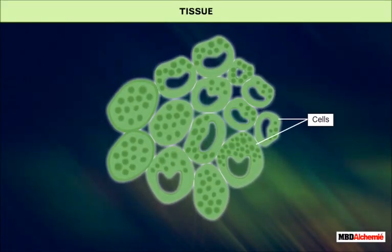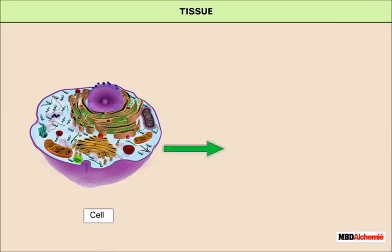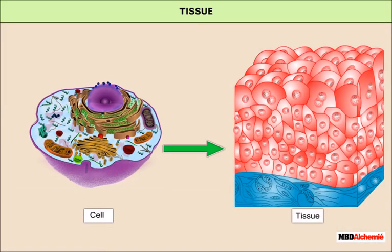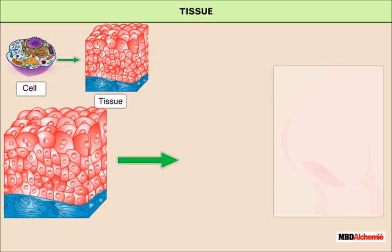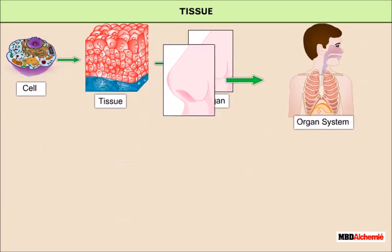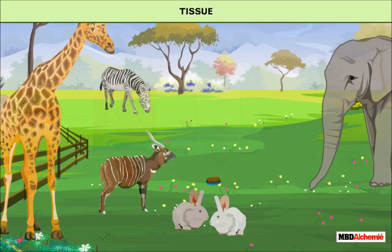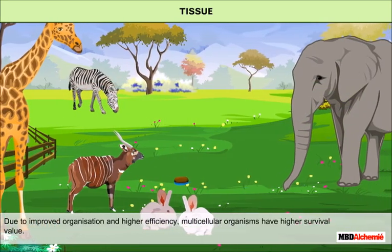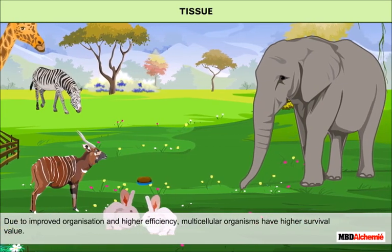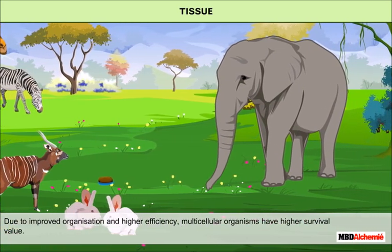A group of cells coordinating to perform a specific function is called tissue. Tissues provide division of labor in multicellular organisms. Cells in a tissue are arranged and designed so as to give the highest possible efficiency. Due to improved organization and higher efficiency, multicellular organisms have higher survival value.